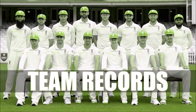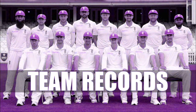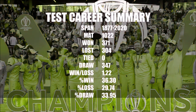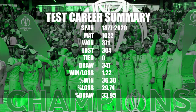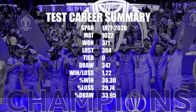England Team Records. Test career summary: Span 1877 to 2020, matches played 1,020, won 371, lost 304, drawn 347.